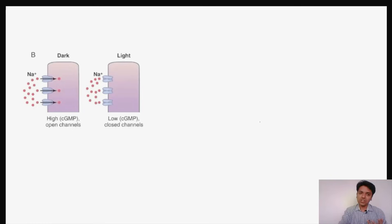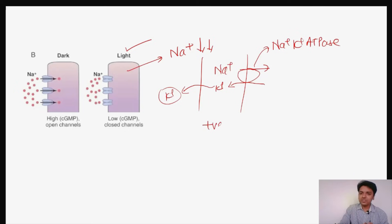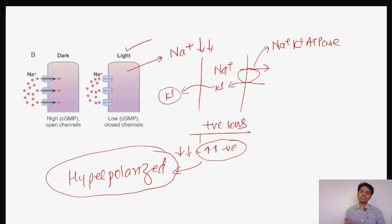When light falls on the rod, sodium concentration inside the cell reduces. Whatever sodium remains inside is pumped out by the sodium-potassium ATPase. Potassium enters via the pump but immediately leaks out via potassium channels. As a result, the concentration of positive ions inside the cell decreases, causing an increase in negativity inside the cell.